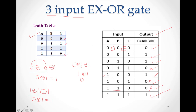In the input table, if we have an odd number of 1s, output is 1. If we have an even number of 1s (like two times 1 in the input), output is 0. This parity checker property is what makes 3-input XOR gate useful. We performed this parity checker example with XOR gate.